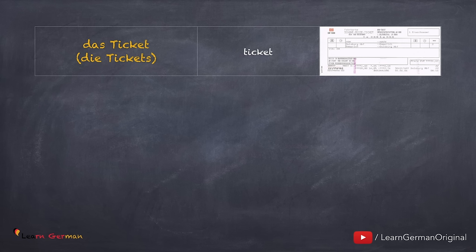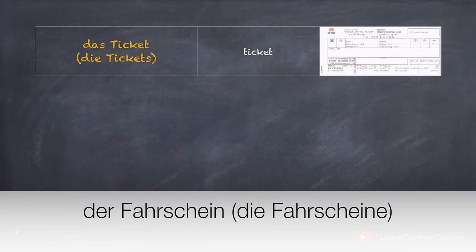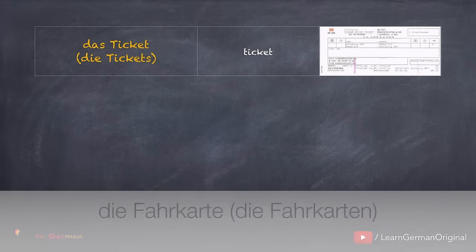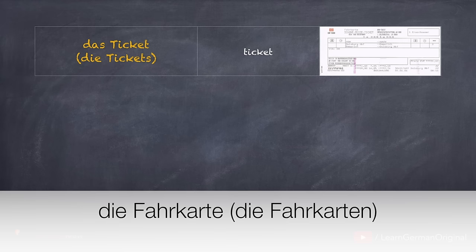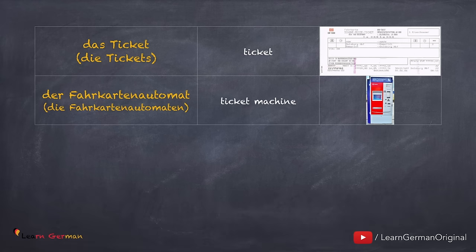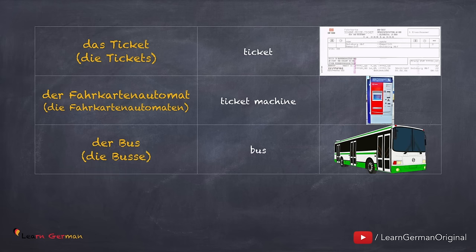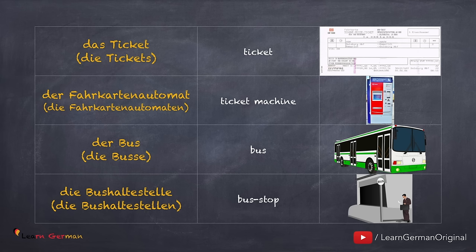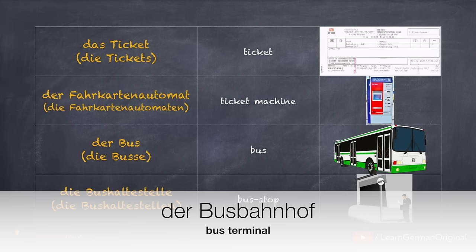Das Ticket, die Tickets. Other words are: der Fahrschein, die Fahrscheine, oder die Fahrkarte, die Fahrkarten. Der Fahrkartenautomat, die Fahrkartenautomaten. Der Bus, die Busse. Die Bushaltestelle, die Bushaltestellen.